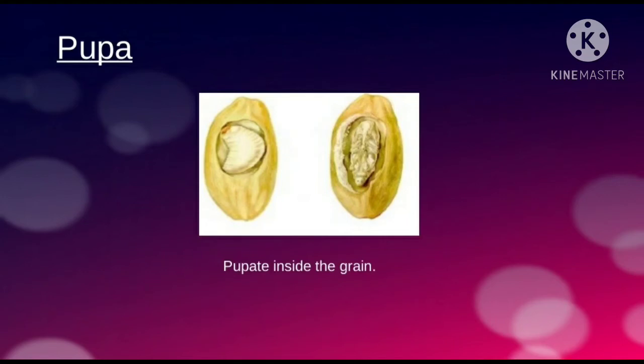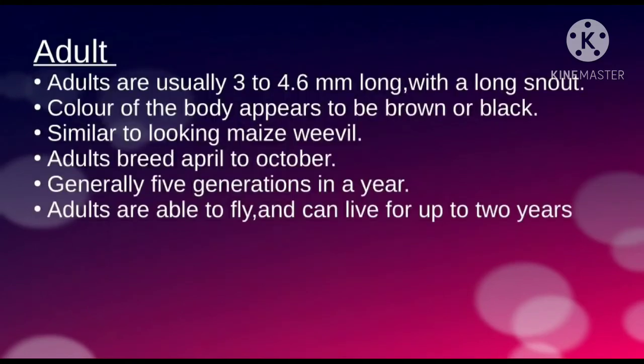Larvae change to pupae. Initially, pupae are dirty white but later they become dark brown in color. Pupal life lasts for six to fourteen days. After that, adult weevils come out through irregular holes made in the grain.